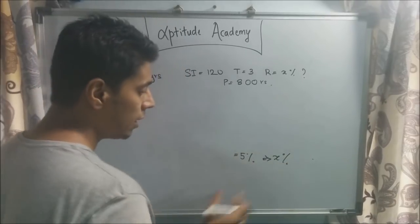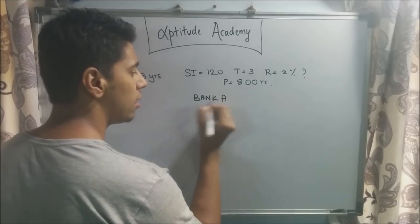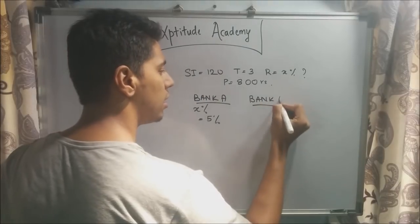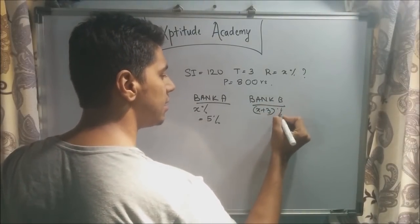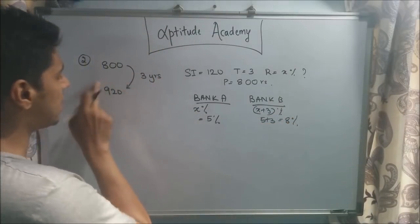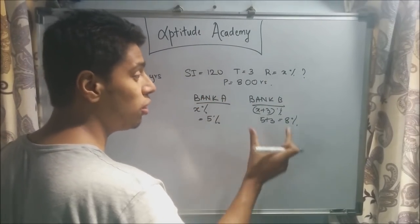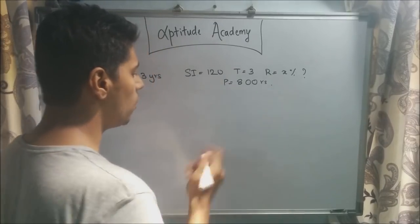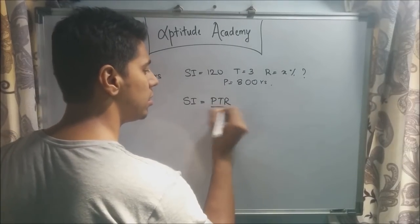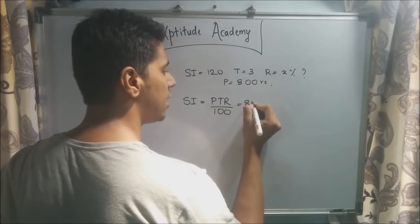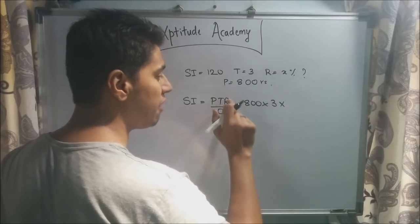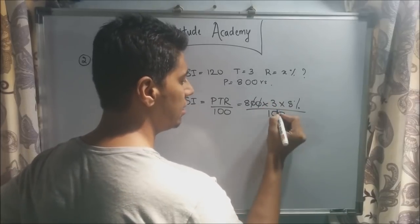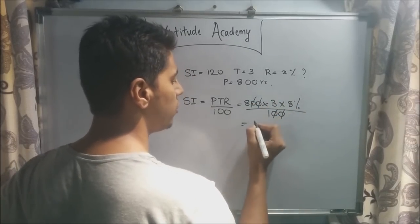Bank A gave you x percent, which is 5 percent. Bank B would have given x plus 3 percent, that is 5 plus 3 equals 8 percent. Now let's find the new simple interest. SI = PTR/100 with P = 800, T = 3 years, R = 8 percent. Calculating: 800 × 3 × 8 ÷ 100 — cancelling gives 8 × 3 = 24, then 24 × 8... the result is 192.